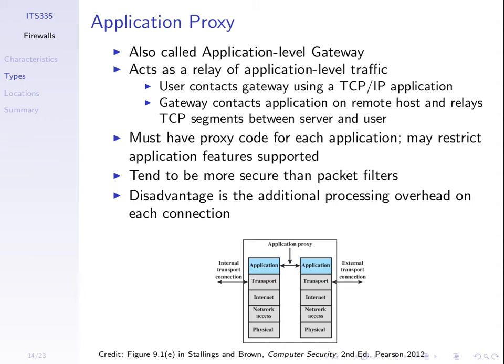An application proxy, also sometimes referred to as an application-level gateway, acts as a relay for application traffic. The firewall device acts as the application proxy, with internal devices like your computer on one side and external networks on the other.